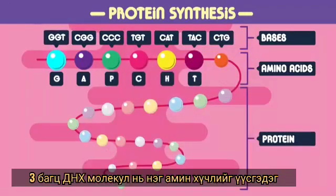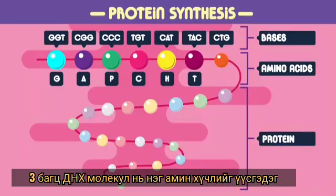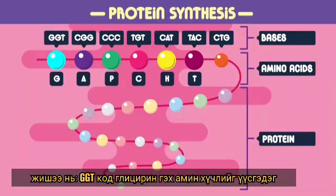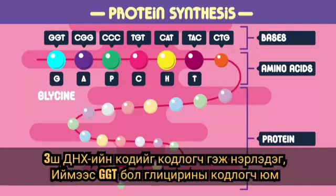A set of three bases in the DNA molecule codes for a particular amino acid. GGT, for example, codes for the amino acid glycine. The three base codes are known as codons, so GGT is a codon for glycine.